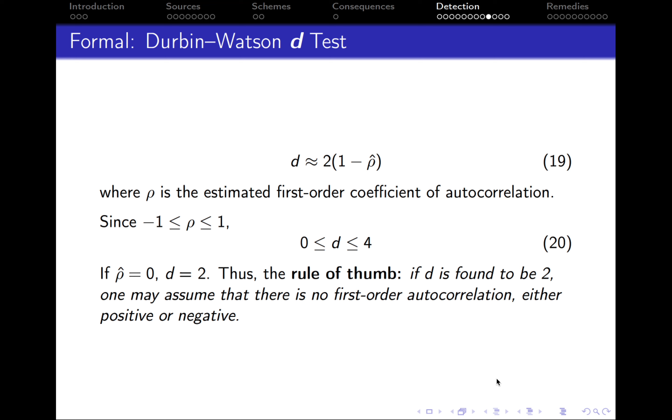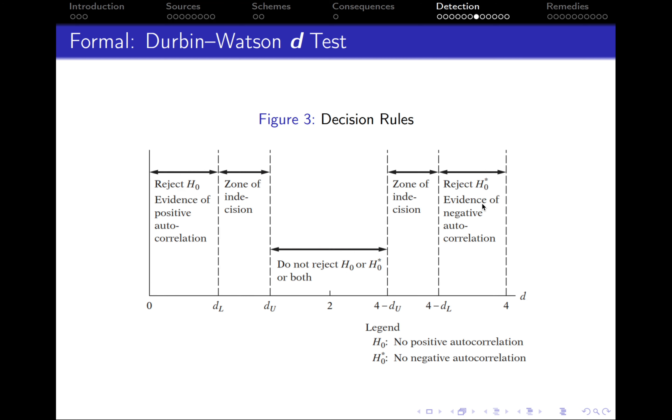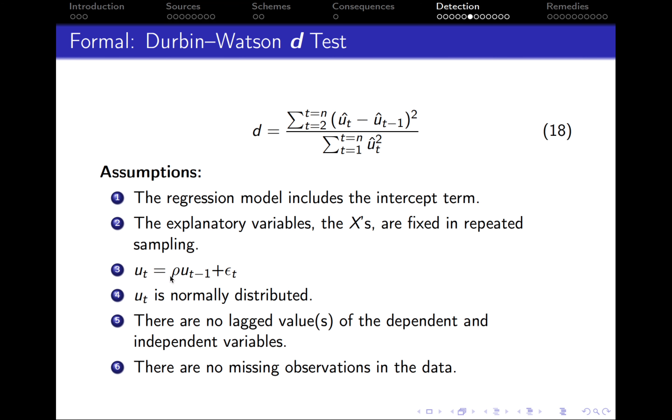An interesting fact about Durbin-Watson is that it can also be calculated using the rho coefficient, or the estimated first order coefficient of autocorrelation. The one that we get from here, from this equation.